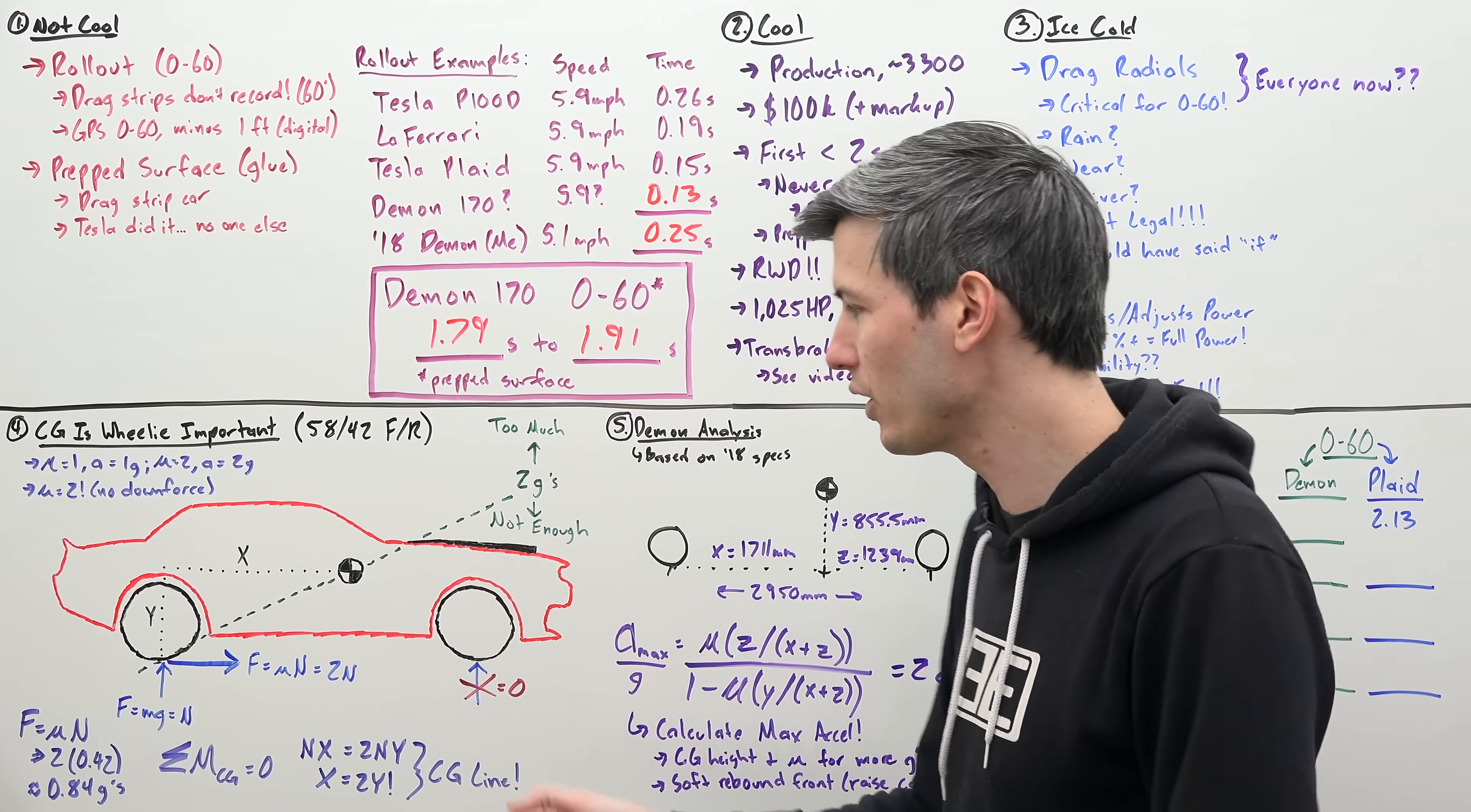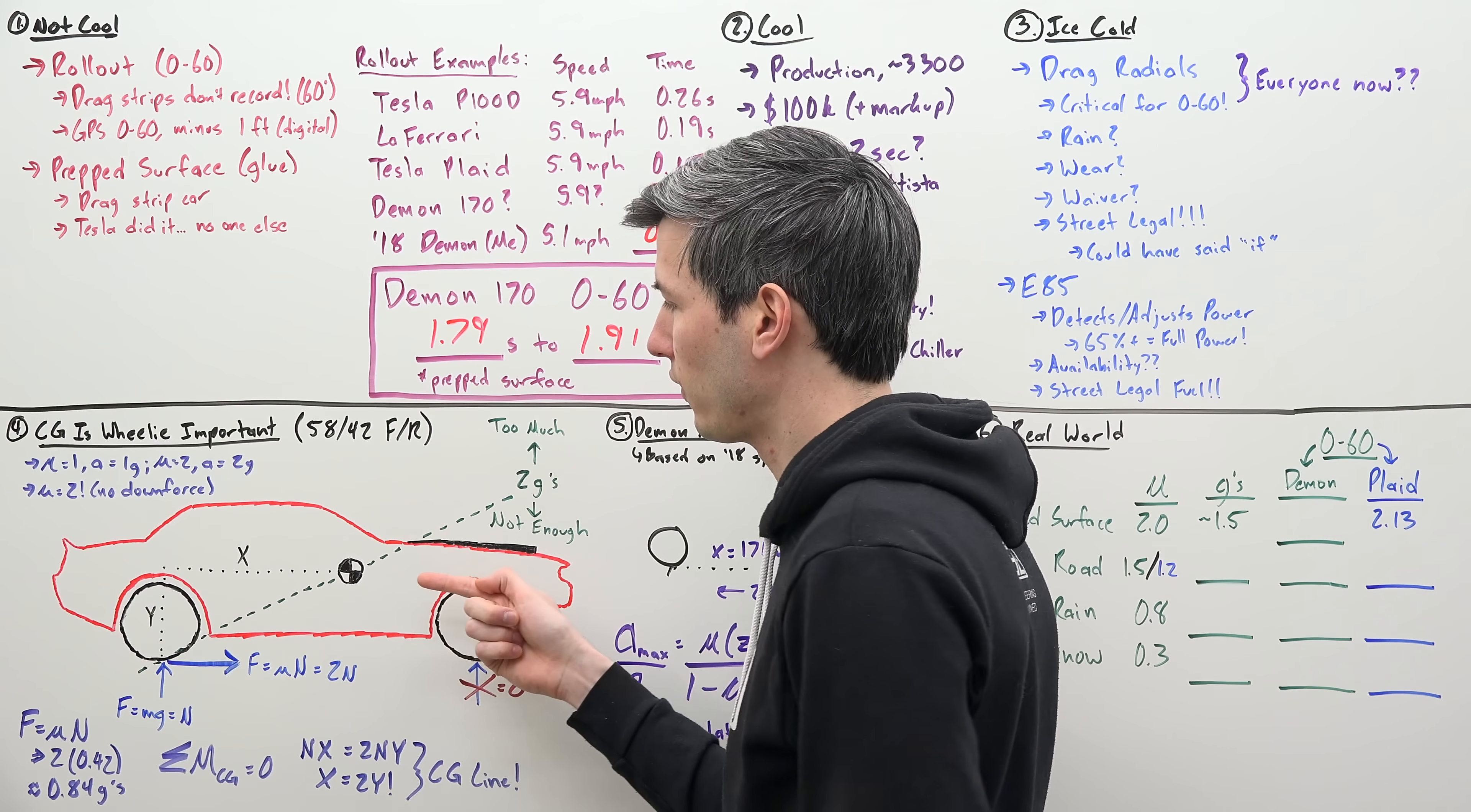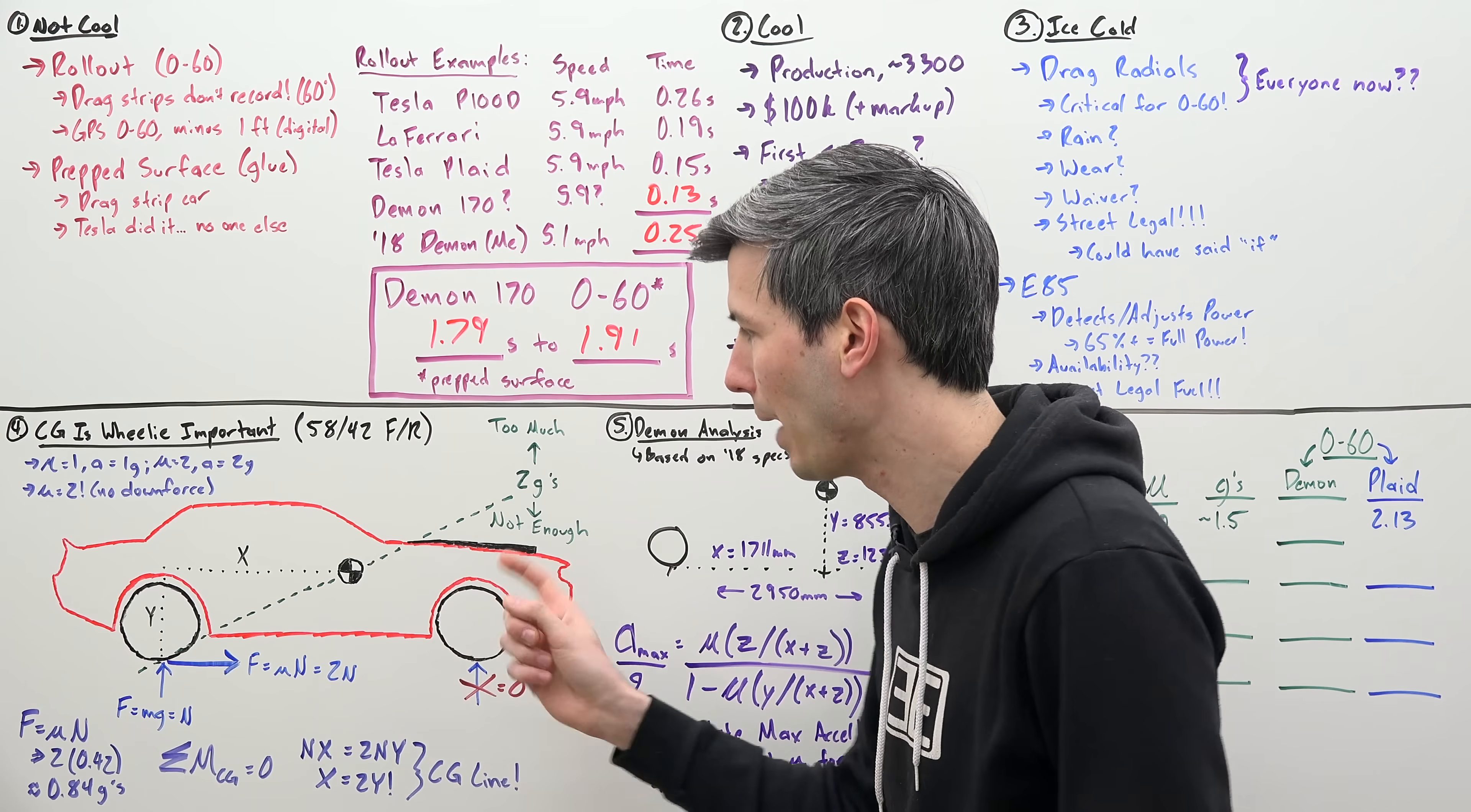Now we know it can do better than 0.84 G's. So how do we improve that? Well, the way you improve it is as you start accelerating, you have load transfer to that rear wheel. So as you start accelerating, the center of gravity, you can pretend that you basically have a force that's saying, okay, now we're resisting this motion and we're transferring load from the front end to the rear end. And where you position that center of gravity is critical if you want to achieve the maximum acceleration.